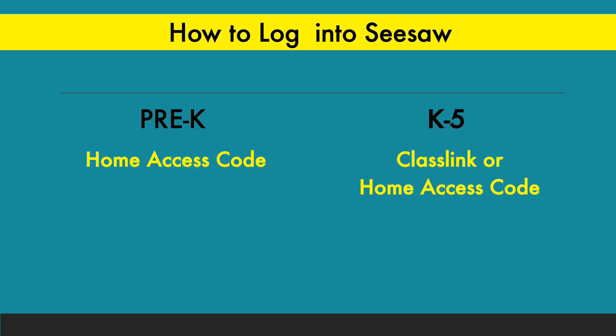If you are a pre-k student, you need to use the home access code to access Seesaw. This will be provided by your teacher, probably in an email. If you are in K-5, you can use ClassLink to get to Seesaw, or you can use the home access code provided by your teacher.